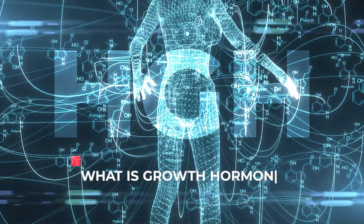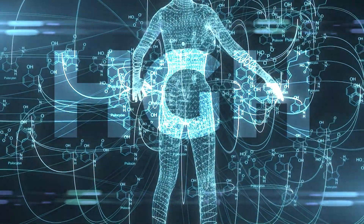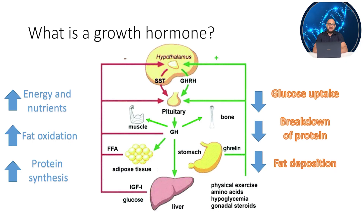So what is growth hormone? Growth hormone, GH, also called somatotropin or human growth hormone, is a peptide hormone that stimulates the growth of essentially all tissues of the body including bones. It is an anabolic peptide, meaning it is responsible for the biosynthesis of other more complex molecules inside the human body.